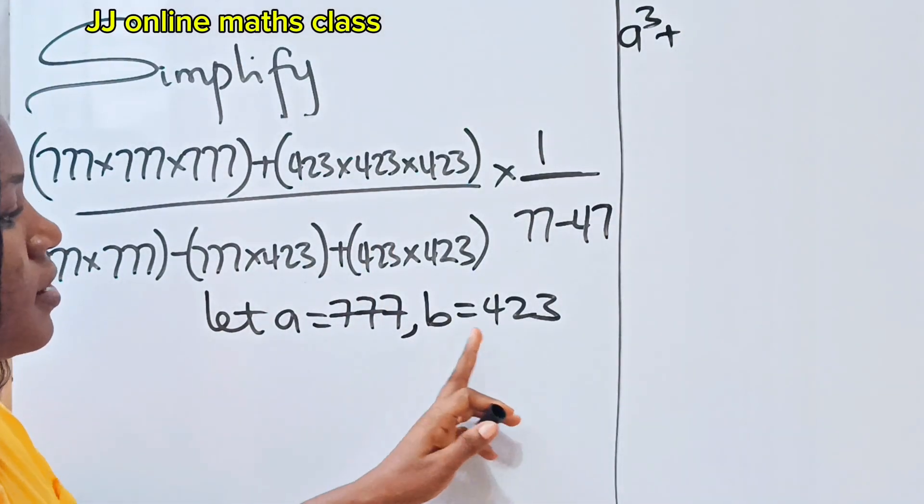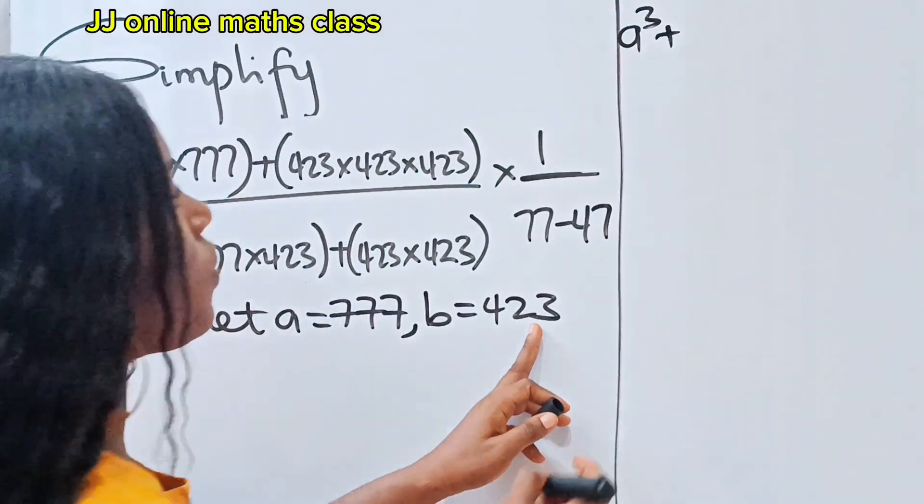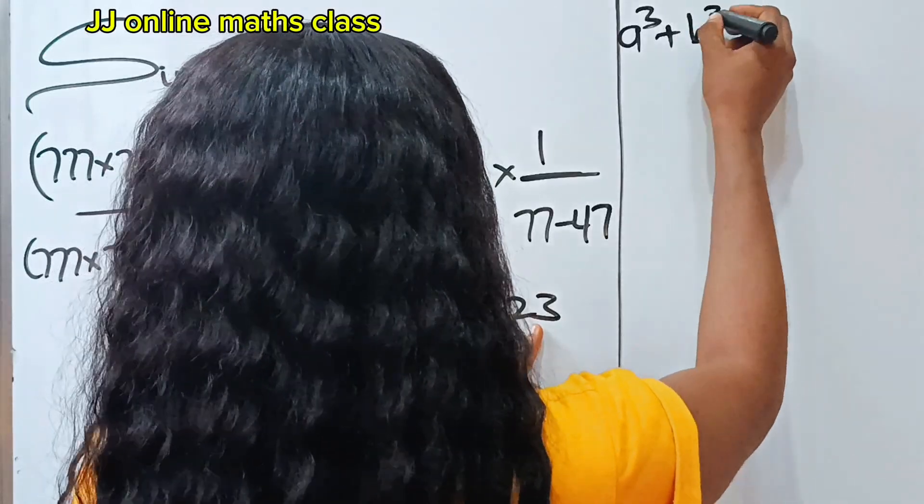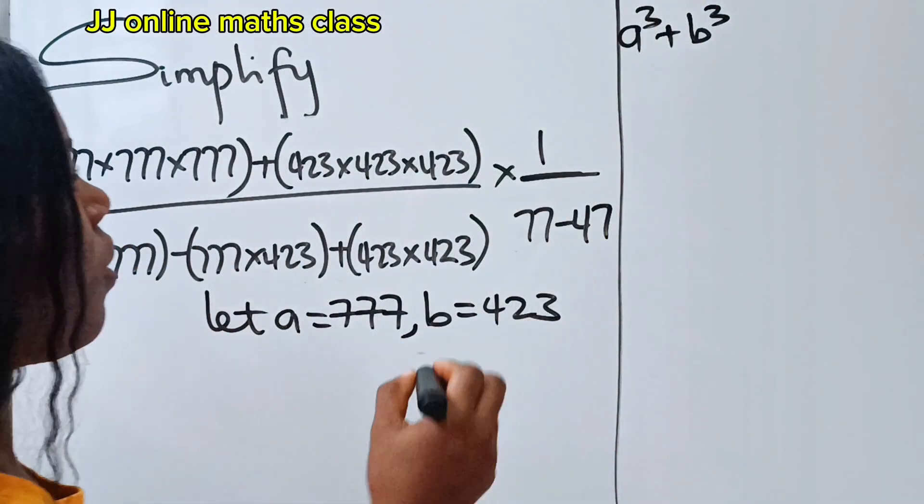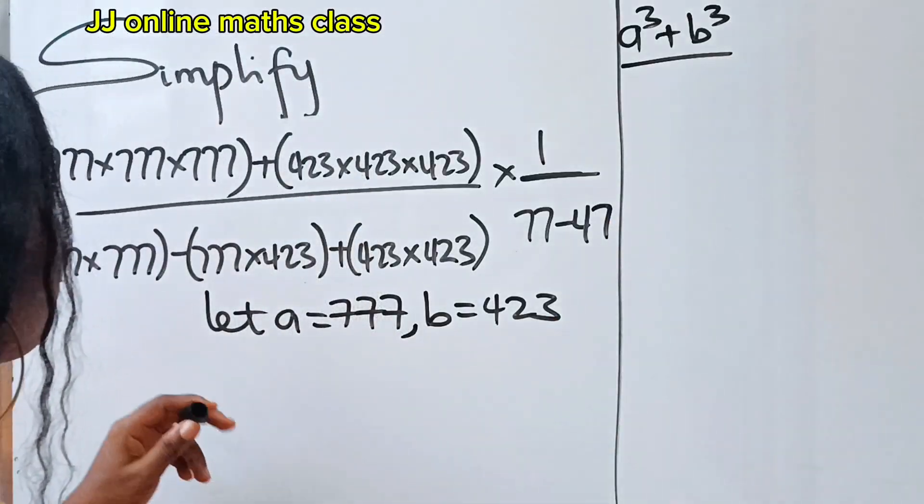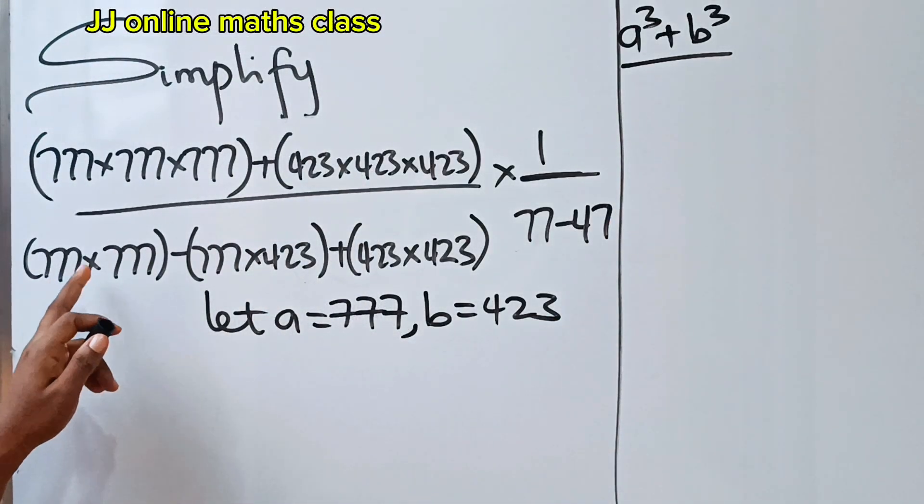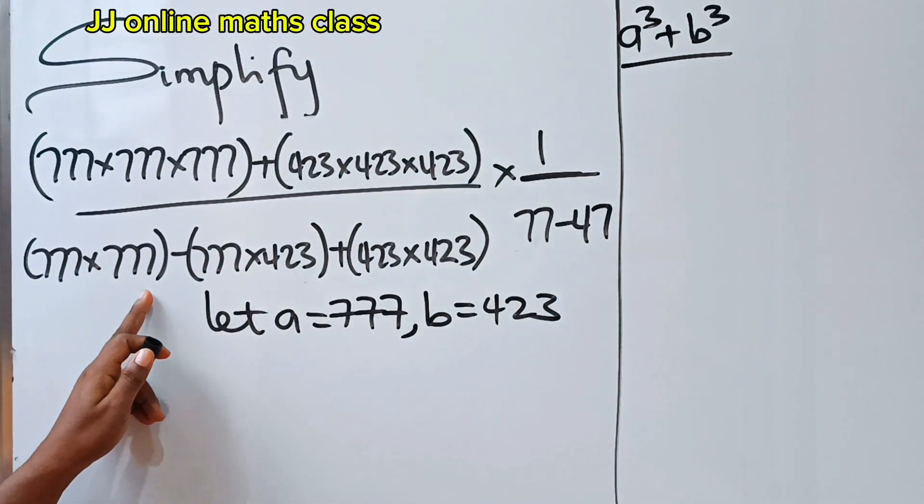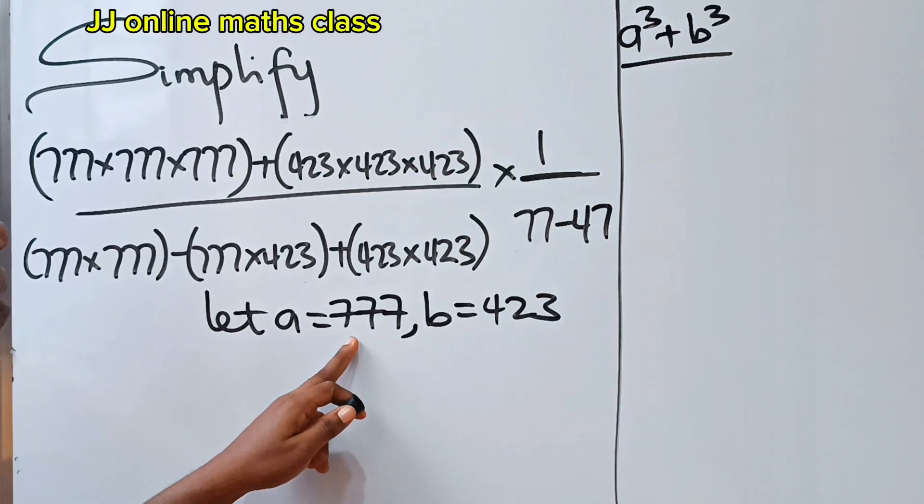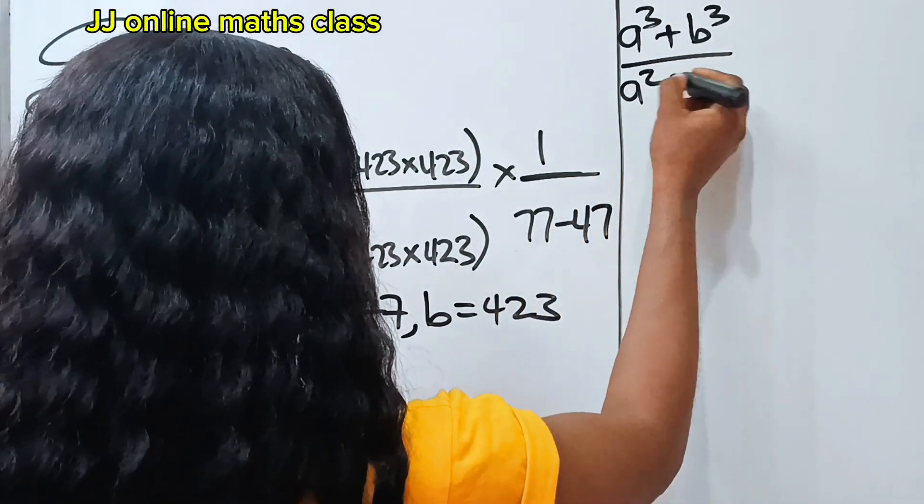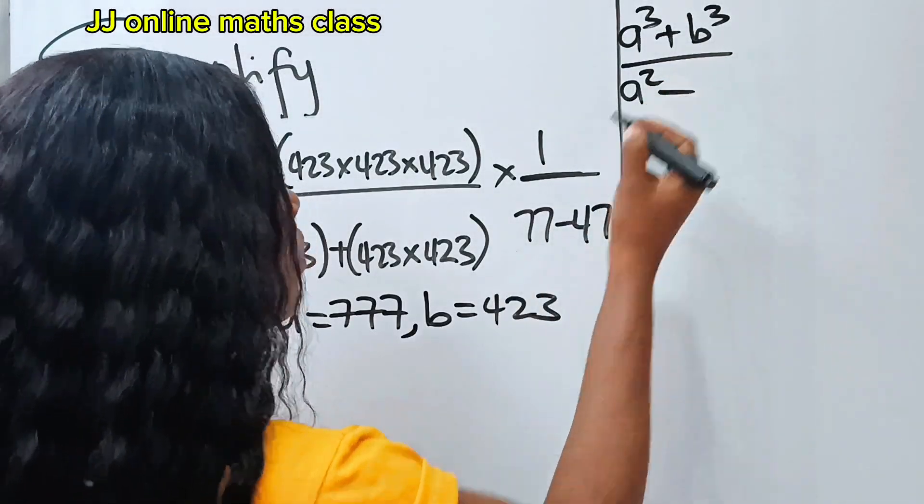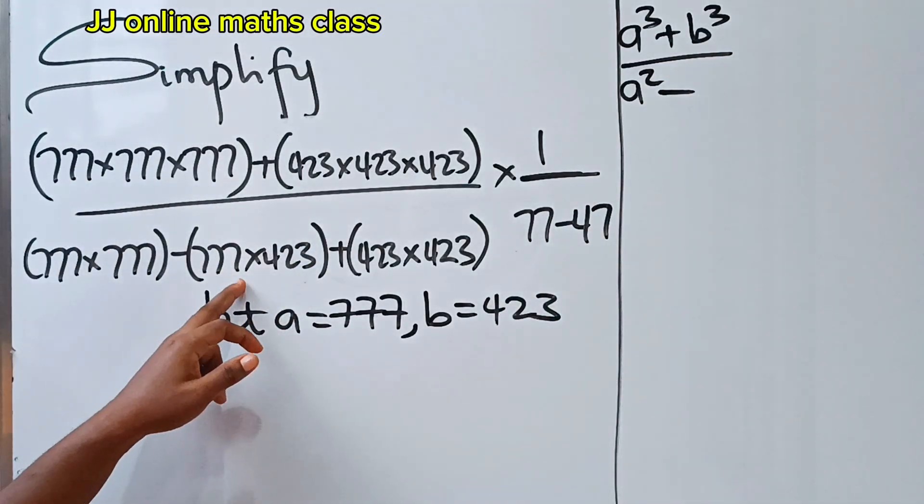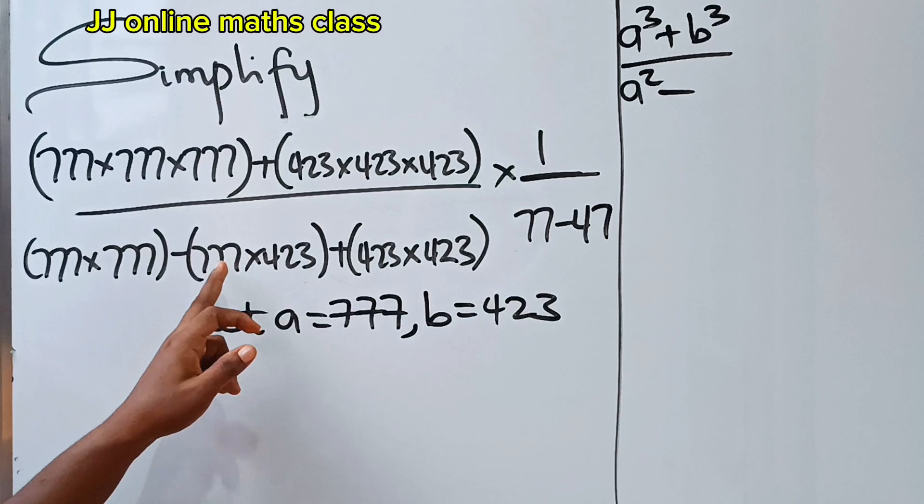b to the power of three, right? Since b is equal to 423, so we have b³ divided by this 777 times 777, that is a². So we have a² plus, minus 777 times 423 should be...